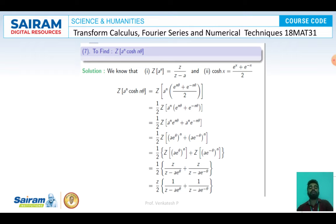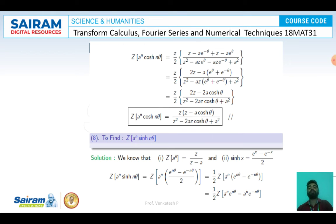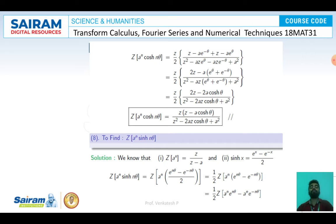Taking Z outside and finding LCM: Z/2 · [Z - ae^(-θ) + Z - ae^θ] / [Z² - aZ(e^θ + e^(-θ)) + a²]. Simplifying the numerator gives 2Z - a(e^θ + e^(-θ)) = 2Z - 2a·cosh(θ), and the Z/2 factor cancels the 2. Therefore, Z{a^N cosh(Nθ)} = Z(Z - a·cosh θ) / (Z² - 2aZ·cosh θ + a²).